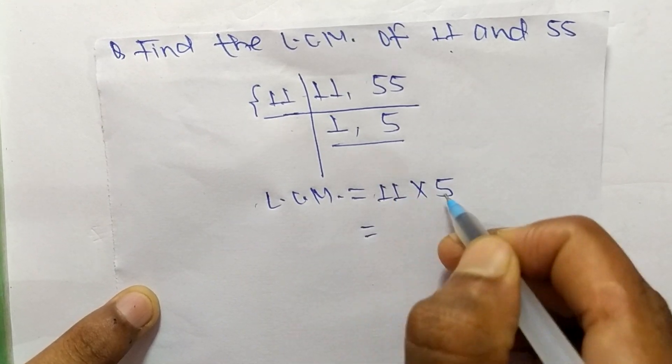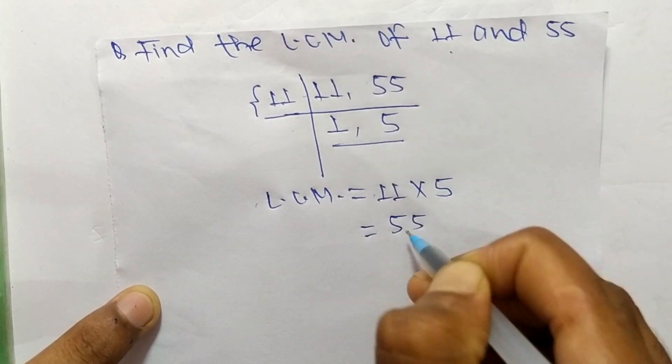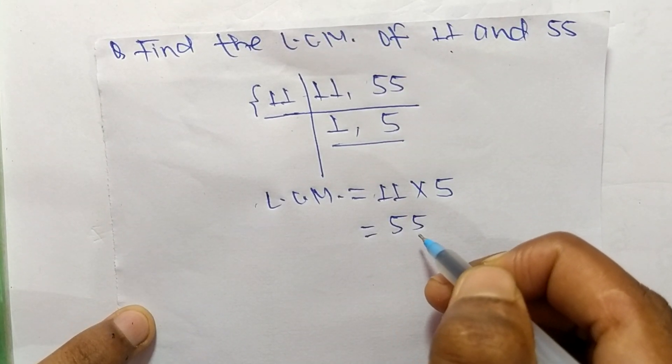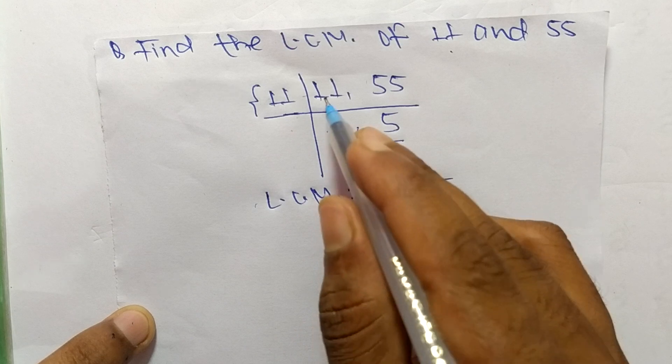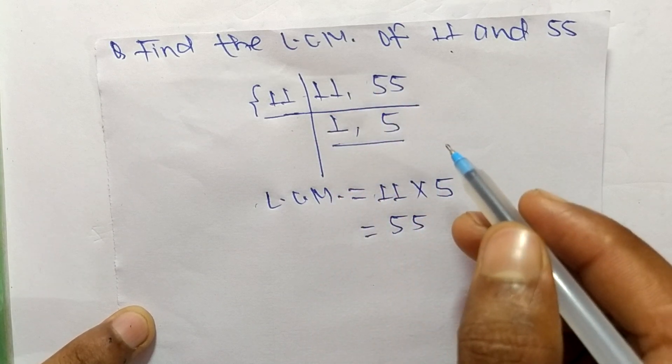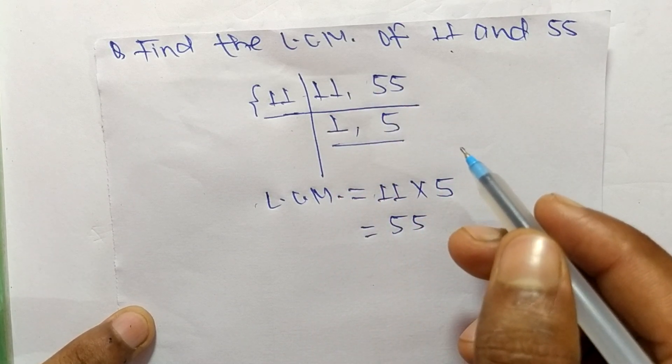So 11 times 5 equals 55. Therefore, 55 is the LCM of 11 and 55. Thanks for watching.